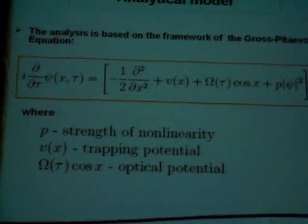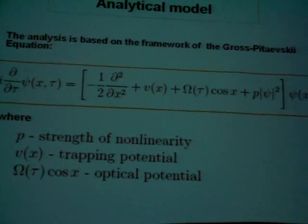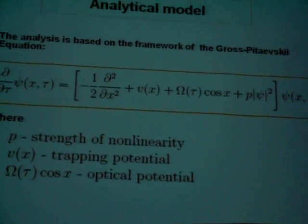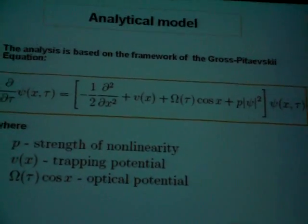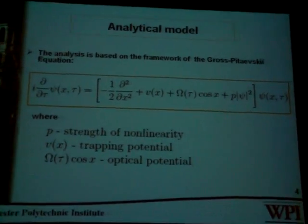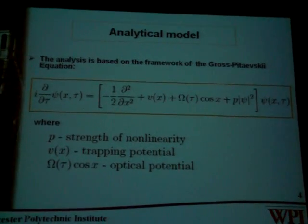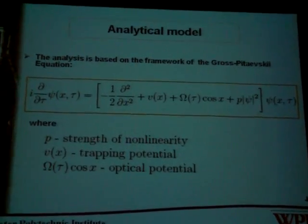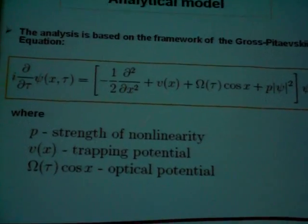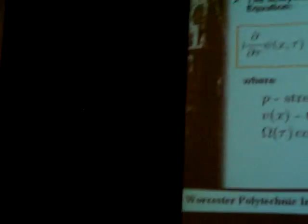We have analyzed this in the framework of the Gross-Pitaevskii equation. This is a dimensionless Gross-Pitaevskii equation, where the optical potential — the third term — comes into play only when the clouds are split and recombined.